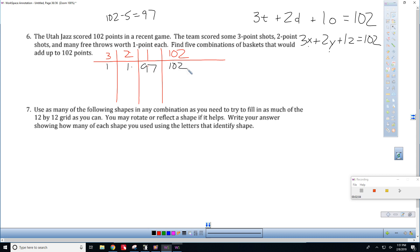And when we do three times three plus two times one plus one times ninety-seven, you get 102 points. So I'm just going to do this as easy as I can. Let's do two threes, that's six, one two, eight. How many less than 102 is eight would be 94 free throws.